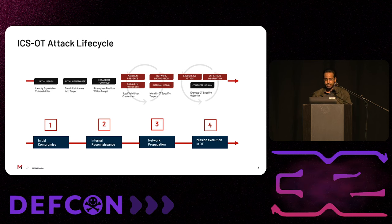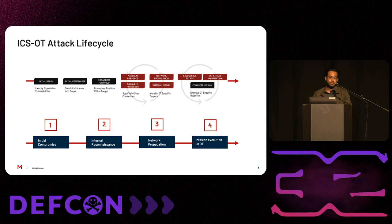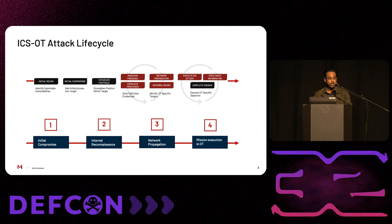From an attacker's perspective, this typically translates to information gathering, perimeter breach, privilege escalation, internal reconnaissance, network propagation, and finally a precise execution to achieve a predetermined objective in an OT environment. The basic idea is to obtain prior information about the target system, breach the protected perimeter, remain undetected while operating within the target environment, and then launch a precise attack. Each phase of this attack lifecycle presents an opportunity for detection and mitigation. It's important to understand the ICS-OT attack lifecycle, identify security issues before an attacker exploits them, develop preventive or detective controls for known TTPs, and mitigate attack vectors across multiple phases.